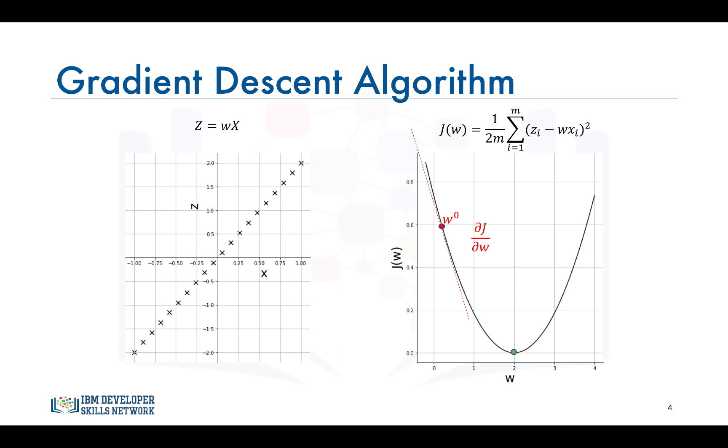The gradient is given by the slope of the tangent at w equals 0.2, and then the magnitude of the step is controlled by a parameter called the learning rate. The larger the learning rate the bigger the step we take, and the smaller the learning rate the smaller the step we take. Then we take the step and we move to w1. w1 is essentially computed as w0 minus the learning rate times the gradient at w0. This represents the first iteration of the algorithm.